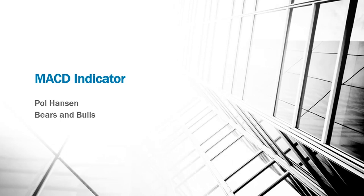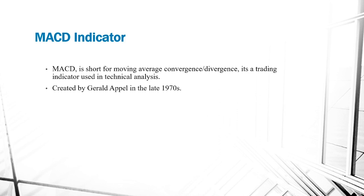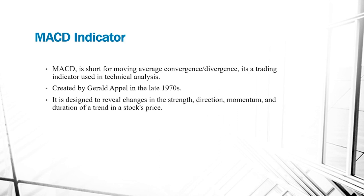Welcome back to our channel. Today we're going to discuss one of the most commonly used indicators for technical analysis: the MACD indicator. The MACD is short for Moving Average Convergence Divergence. It's a trading indicator used in technical analysis, created by Gerald Appel in the 1970s, and is designed to reveal changes in the strength, direction, momentum, and duration of a trend in a stock price.